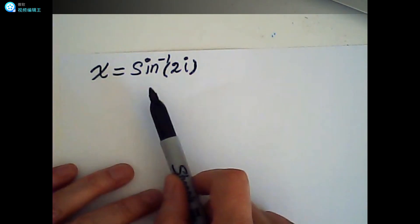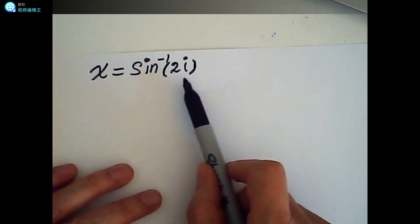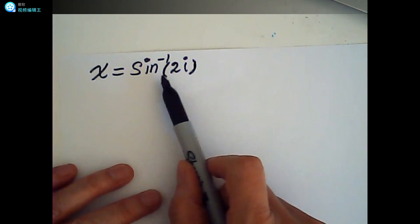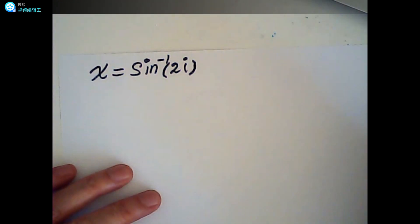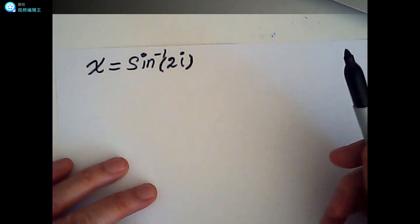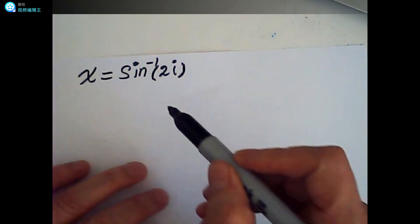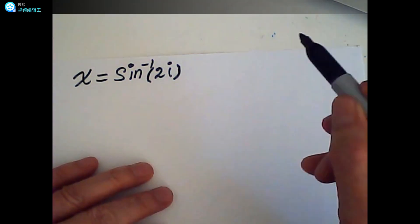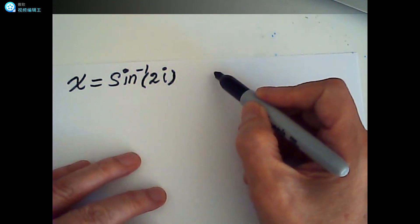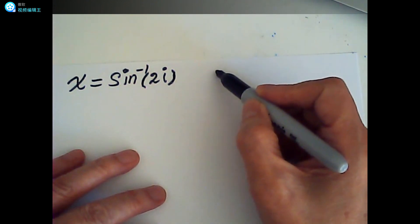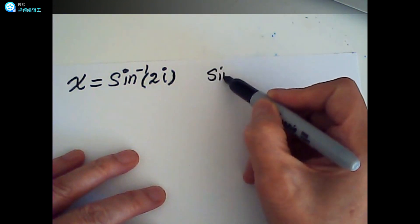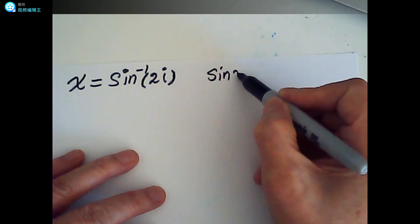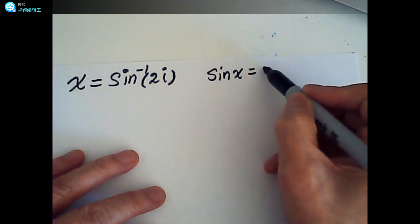Let's have a question. We're looking for arcsin(2i). So x is equal to arcsin(2i), which means that sine x is equal to 2i.